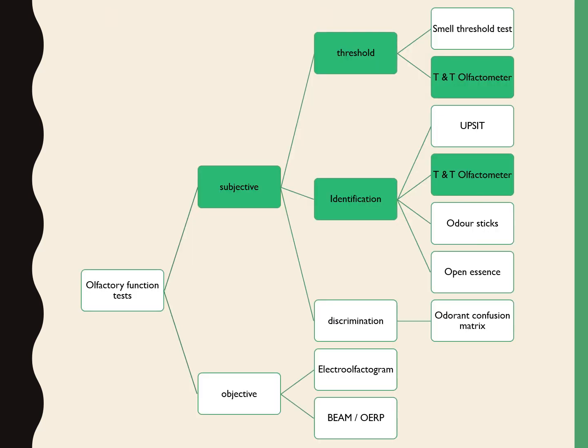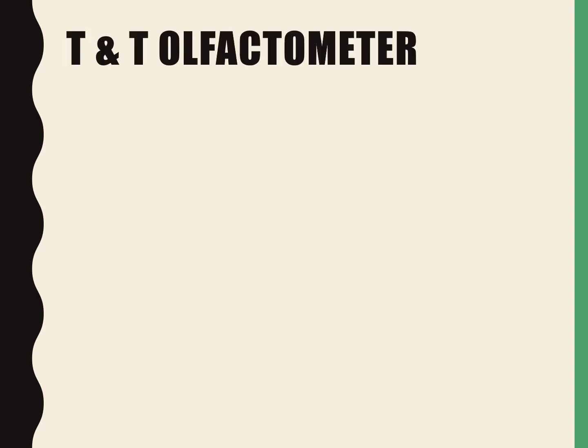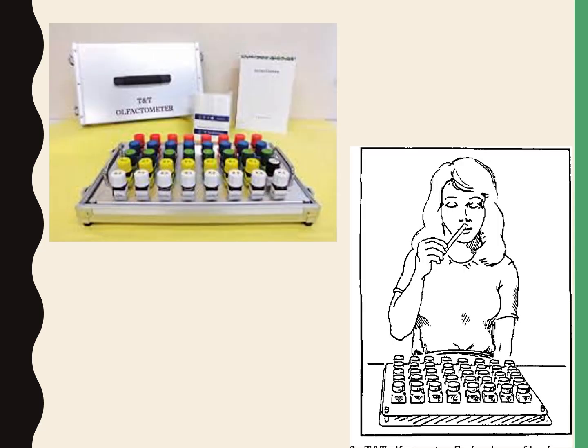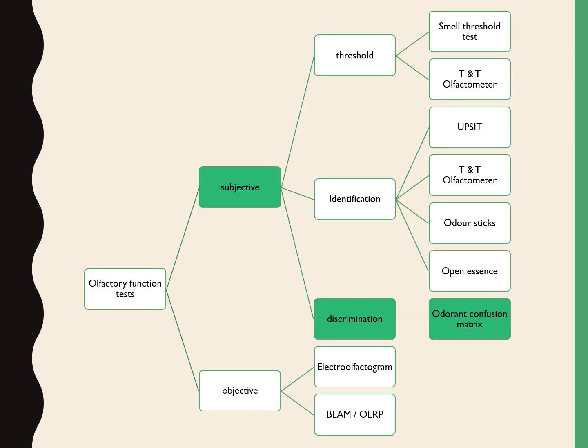The next test is the TNT olfactometer, which is both an identification and threshold estimation type of subjective test. It is used in Japan. A rack containing eight concentrations of five different odorants is presented, allowing both identification and threshold estimation. This is the rack of the TNT olfactometer showing five odorants in eight different concentrations.